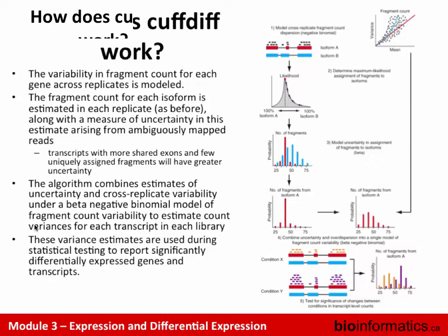CuffDiff combines estimates of uncertainty with cross-replicate variability into what they call a beta-negative binomial model of fragment count variability, to estimate count variances for each transcript. You get estimates of FPKMs — expression levels — and a concept of variance between samples for those transcripts. Those variance estimates are used for statistical testing to identify differentially expressed transcripts. If you want to really understand how CuffDiff works, you essentially need to become a statistician and read the paper.